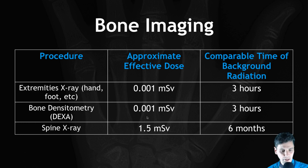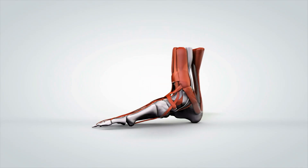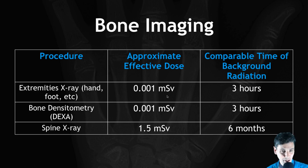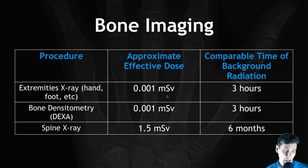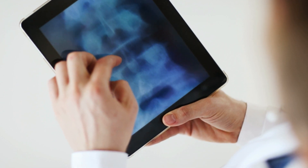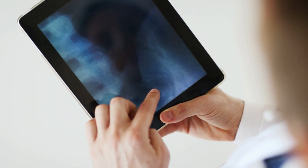Bone imaging is the next topic. For x-ray imaging of the extremities, the radiation dose is quite low — 0.001 millisieverts — equivalent to about three hours of background radiation. So you'll have the exam and be exposed for a very short time, getting a radiation dose equivalent to what the whole body gets in about three hours of standard living in the United States. Bone densitometry is also about three hours of background radiation, and a spine x-ray is about six months.